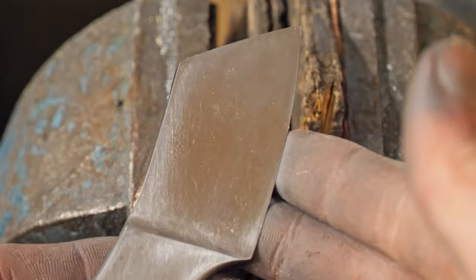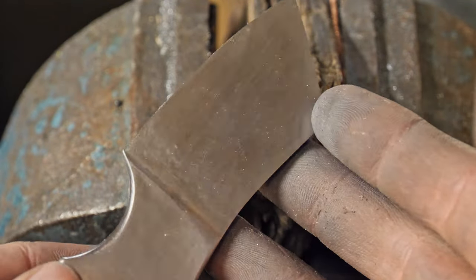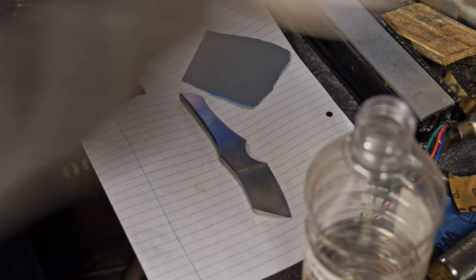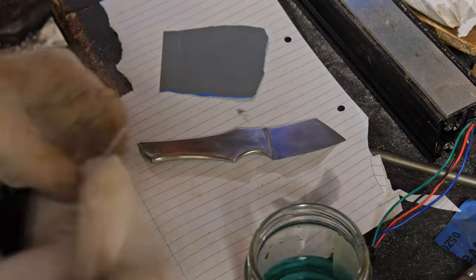I sanded the blade to 600 grit before applying a protective cold blue finish. Cold blue or gun blue is a chemical that you can apply onto the surface of steel and it will oxidise the steel and cause it to rust very slightly and this layer then helps protect against further oxidisation.